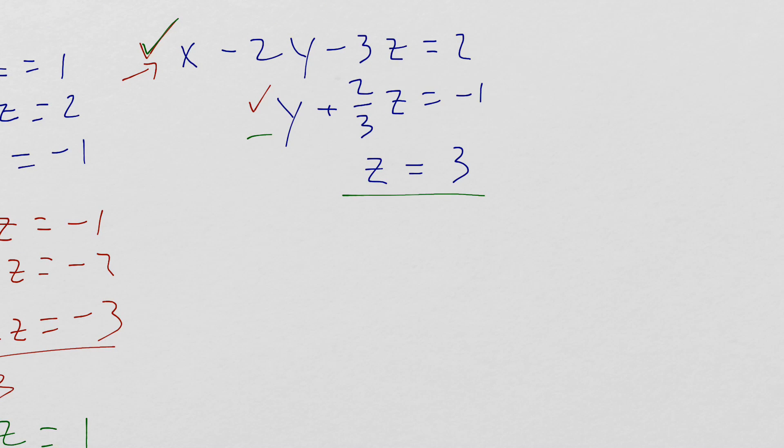Once I know z is equal to 3, I can substitute that into the previous equation. I'm going to solve for y. So I get y equals negative 2 thirds times z minus 1. So y equals negative 2 thirds times 3 minus 1, which is negative 3.